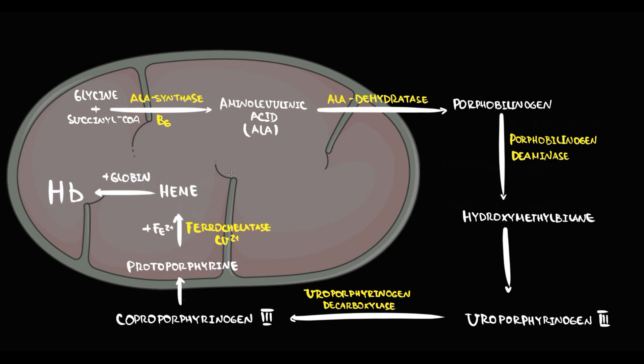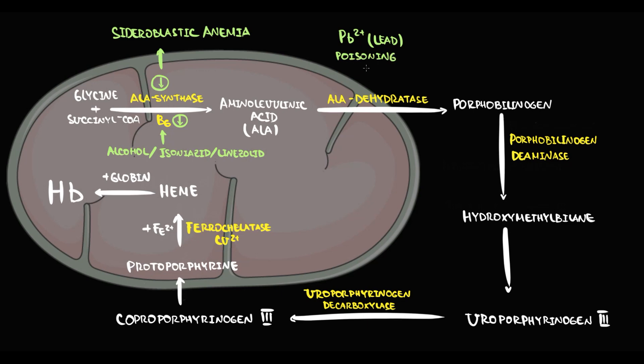But sometimes, this pathway can be disrupted. First of all, alcohol and some drugs as isoniazid and linezolid can inhibit the function of vitamin B6. With inhibition of vitamin B6, ALA synthase cannot function, and this results in sideroblastic anemia. Also, sideroblastic anemia can be caused by lead poisoning. Because lead inhibits the function of ALA dehydratase, and also lead inhibits the activity of ferrocalatase.